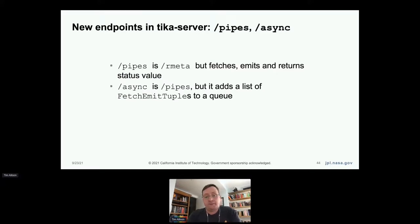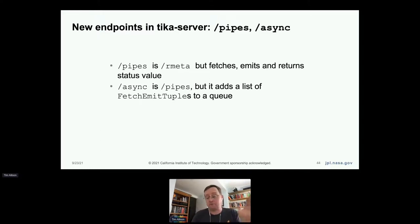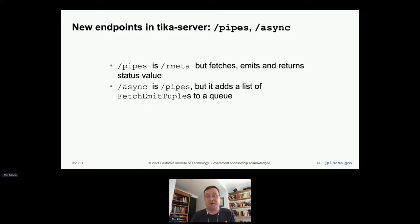We have new endpoints in Tika server: pipes and async. With pipes, you send a single fetch emit tuple to the server, which fetches the bytes, does the parsing, emits the extracted text, and sends back a response for that particular file. With async, you can send a list of fetch emit tuples, and async will farm those out to subprocesses. There's currently no way to find out what happened aside from logging, but async will handle that processing — it's where you can now send a 100-page PDF and it will eventually get processed.